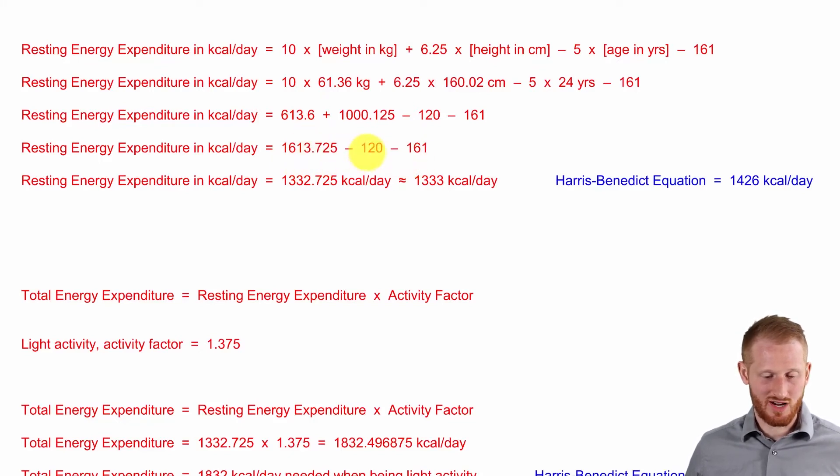And then we will subtract from that the two subtractions. So the 120, which came from the age and then the y-intercept that was 161. So once we subtract these values out from this value, we get 1,332.725 kilocalories per day, which we'll just round off to 1,333.